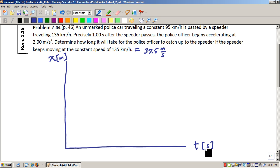We'll just begin with the easier one, which is the speeder's position versus time plot. The speeder is going at a constant rate of 37.5 meters per second.